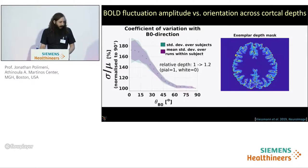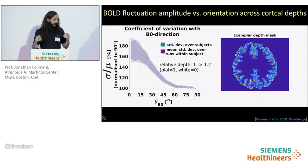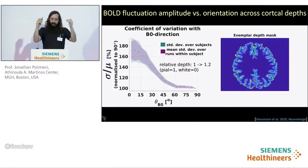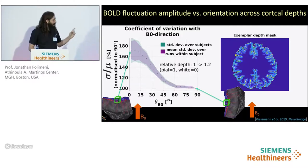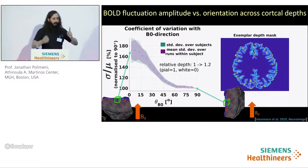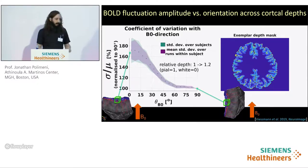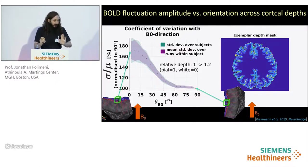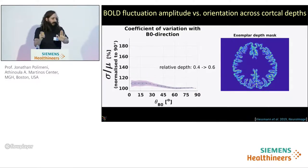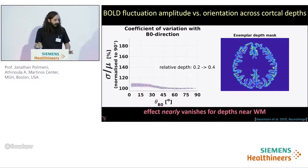We wanted to see to what extent this effect would be detected in resting state fMRI data and whether it varied across cortical depths. In our 7 Tesla data, the BOLD fluctuation amplitude is indeed a function of cortical orientation and varies across cortical depths. Looking at voxels sampled near the pial surface, the fluctuation amplitudes in locations where the cortex is oriented parallel to B0 are 70% larger compared to locations where the cortex is perpendicular to B0. As voxels are pushed deeper into the gray matter, this effect slowly melted away, reaching about a 10% effect near the white matter surface.